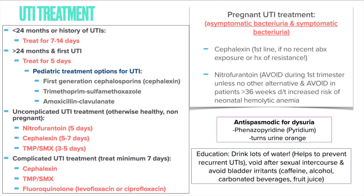For UTI treatment, pediatric patients are divided into two populations. Those less than 24 months should be treated for 7 to 14 days; those older than 24 months with a first UTI may be treated for 5 days. Safe options in the pediatric population include first-generation cephalosporins such as cephalexin, Bactrim, and Augmentin.